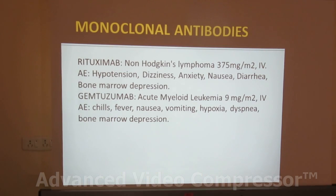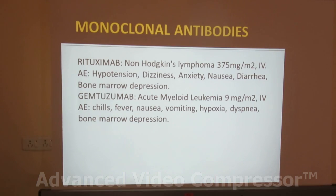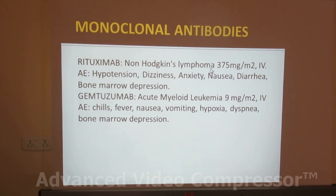Coming to the monoclonal antibodies - what is rituximab? 'Mab' stands for monoclonal antibody. 'Xi' is chimeric, meaning it has both human and rat parts. 'Tu' stands for tumor. So it is an anti-tumor drug from monoclonal antibody of chimeric origin, used for non-Hodgkin's lymphoma.